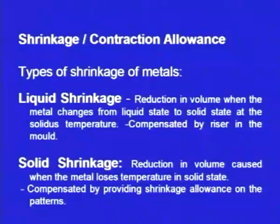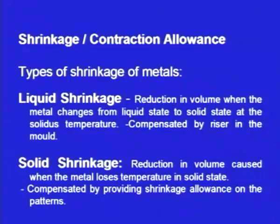There are two types of shrinkage of metals. One is liquid shrinkage and another one is solid shrinkage. During liquid shrinkage, the metal undergoes reduction in volume as it transitions from the liquid state to the solid state. This will be compensated by the riser. The molten metal in the riser is kept in liquid state for more time, so when the casting is undergoing solidification and shrinkage, the liquid metal in the riser counteracts the effect of liquid shrinkage.